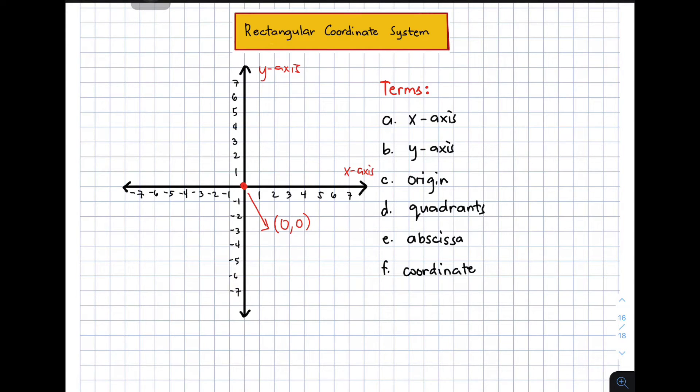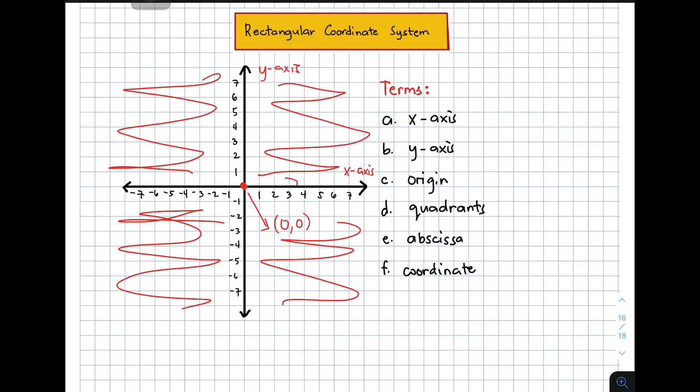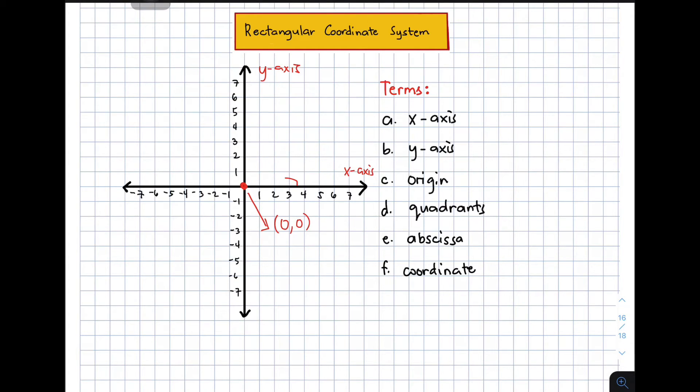The fourth one is what we call quadrants. When we say quadrants, it is the four equal regions in a rectangular coordinate system that is created when the x-axis and y-axis intersected each other. Quadrants are the four equal regions created when the x and y-axis intersected each other. Where are they? So these are the quadrants. This part, this, this, and this.